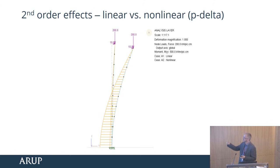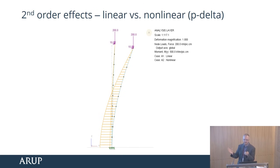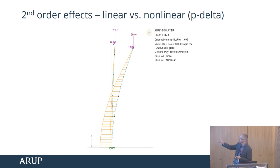The way you build a model can exacerbate this. We tend to build FE models perfectly vertical, but in reality on site there are tolerances — things are out of plumb — and that can add to these effects. Normally we might add in notional horizontal loads. With non-linear analysis, we can model those explicitly.